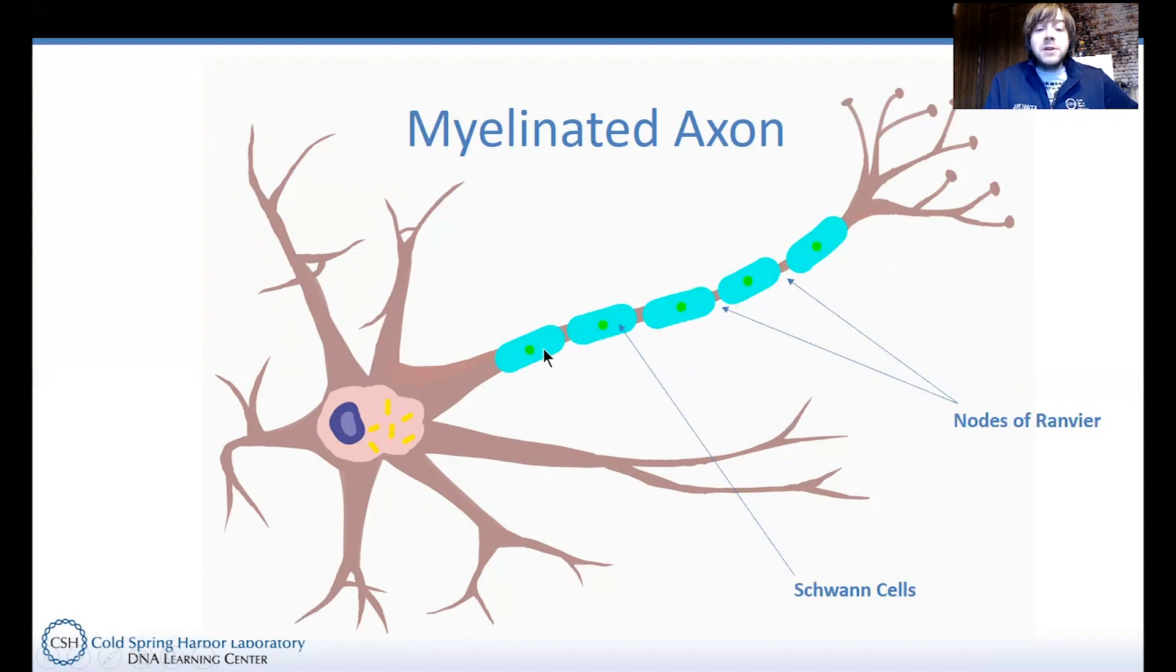And what that winds up doing is it causes these little sort of nodes to develop in between myelin sheaths. Those nodes are referred to as nodes of Ranvier. And so basically what this does is it forces the electrical signal of the action potential to essentially propagate from just these nodes, basically, essentially the myelin acts as insulation. And what that winds up doing is it winds up driving up the speed of the action potential traveling down the axon.